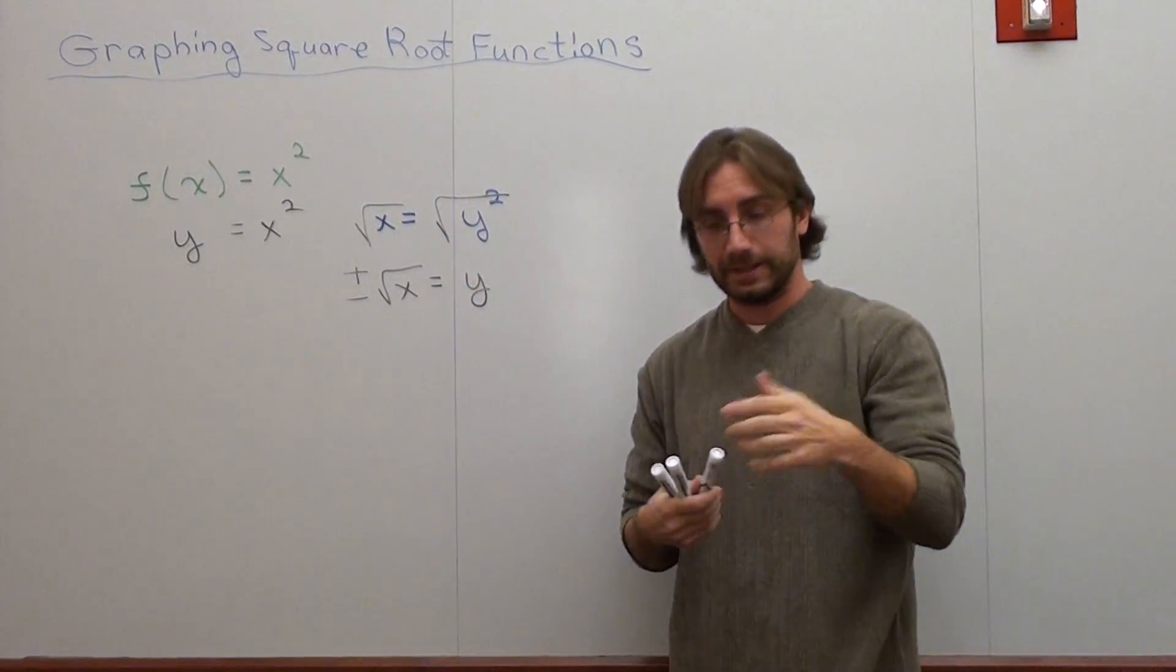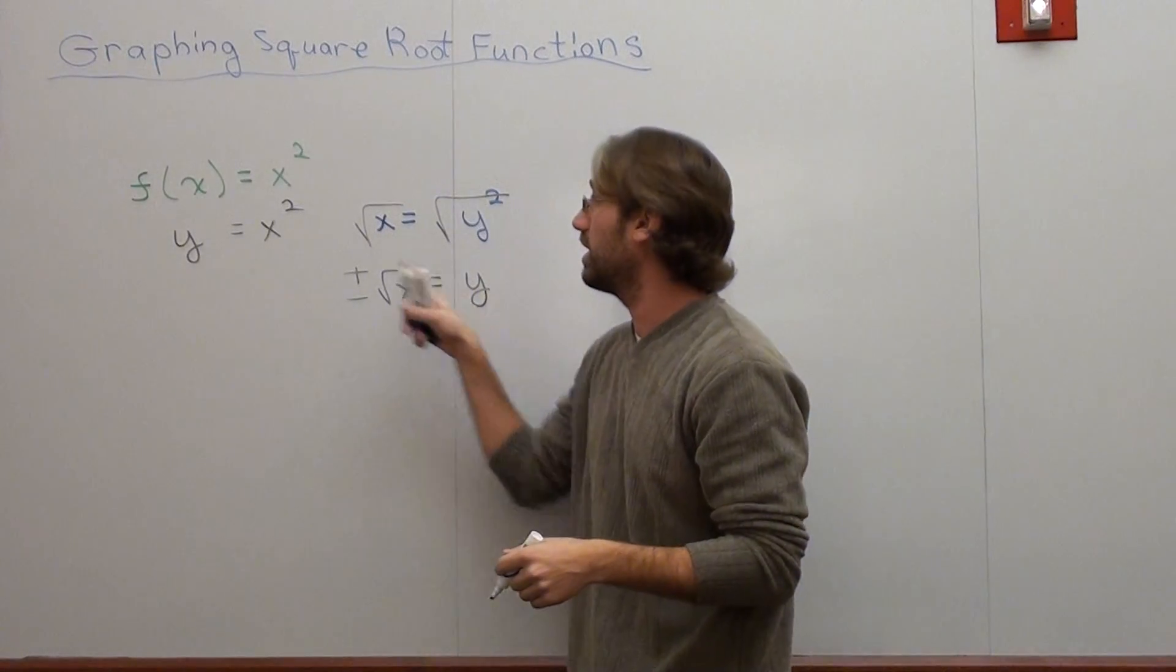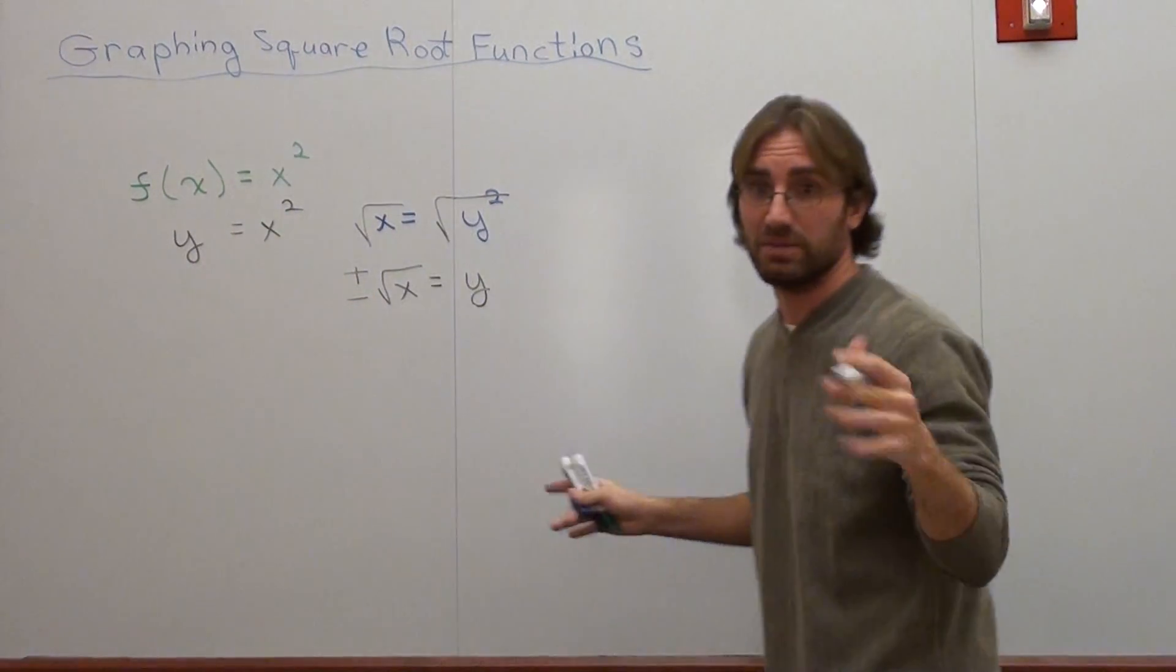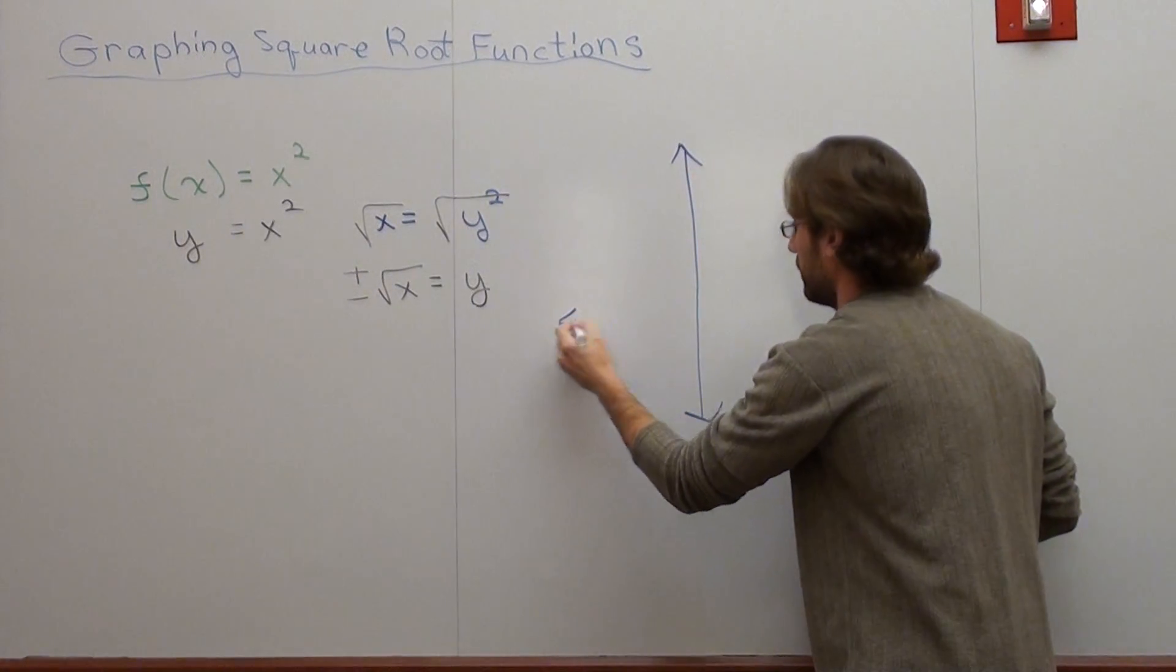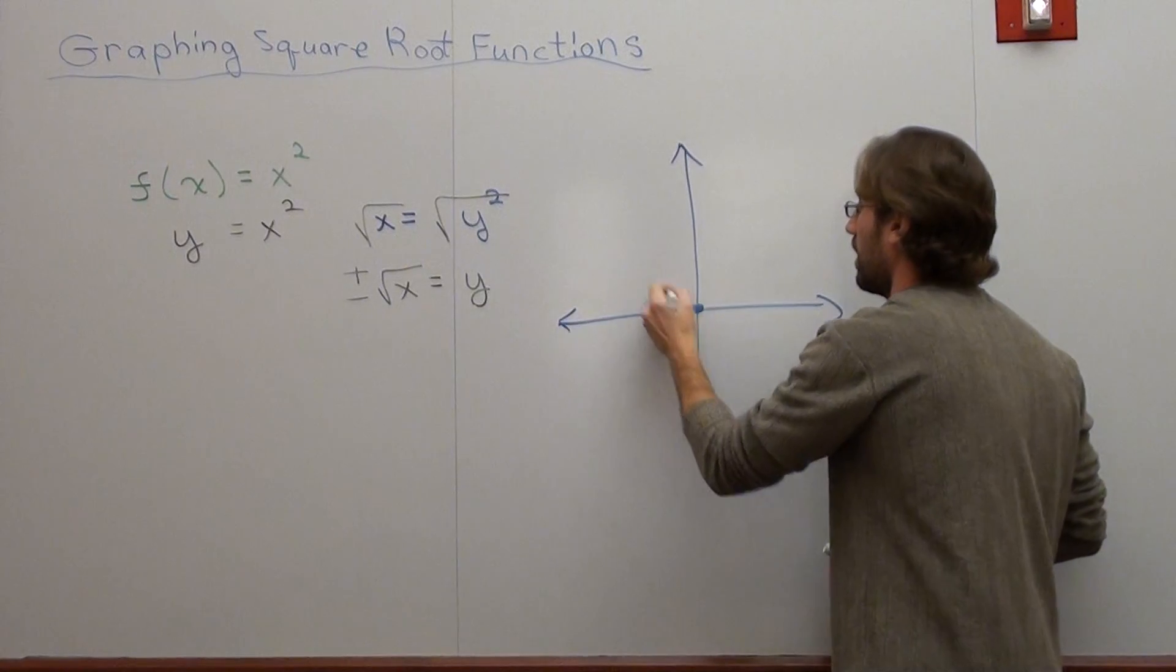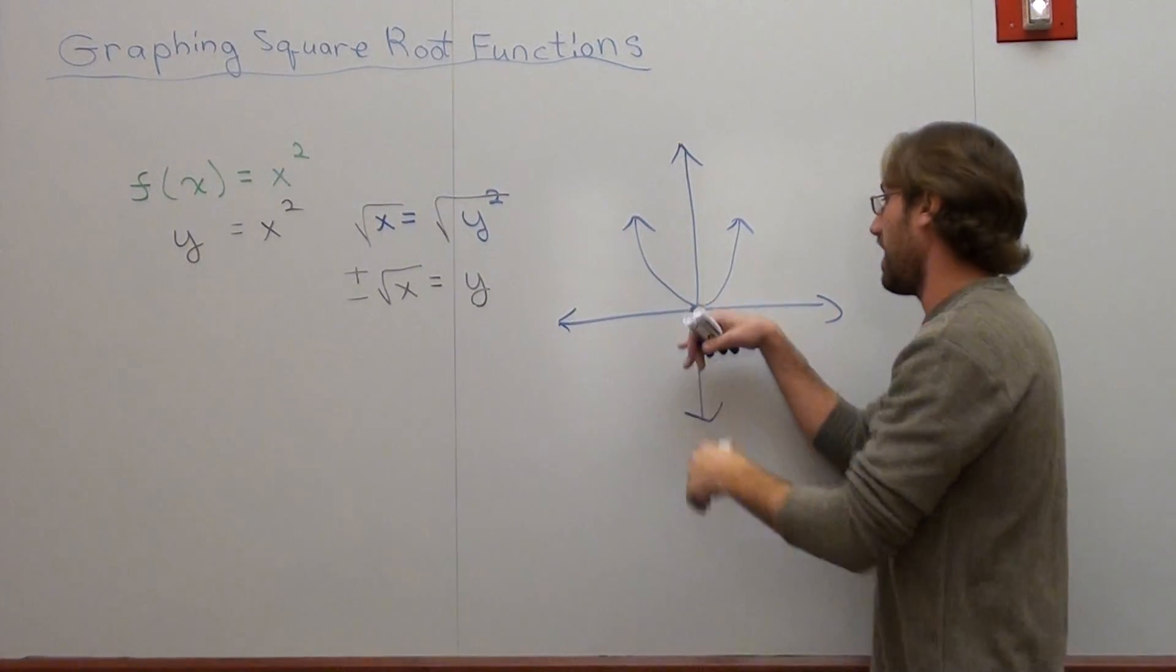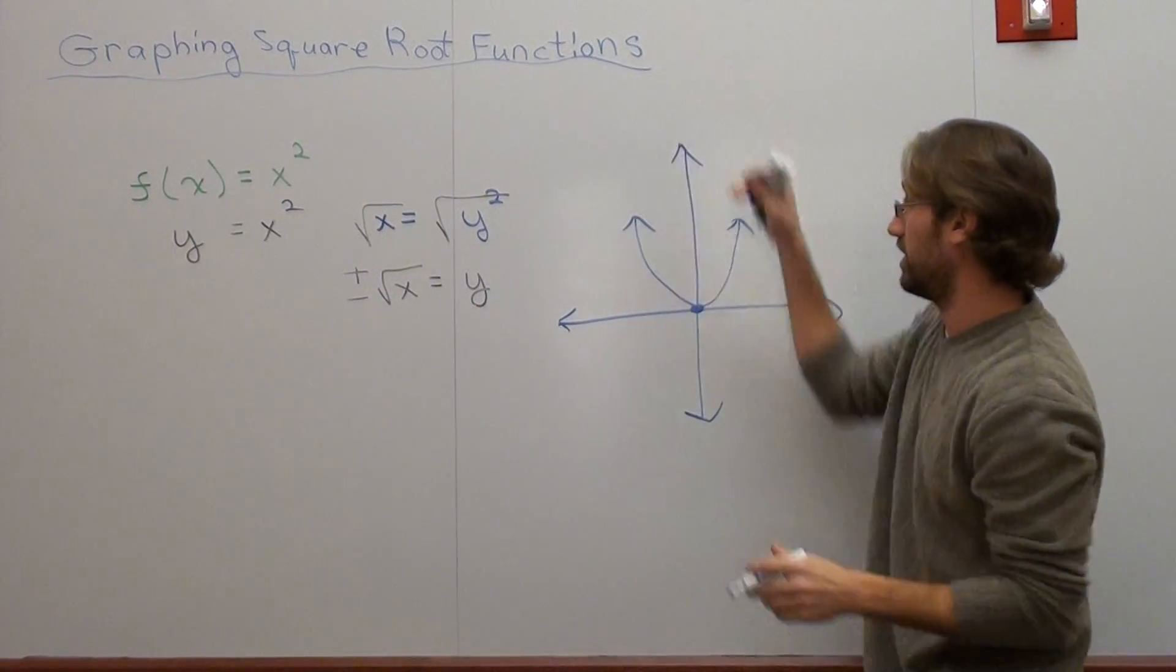Now the problem with this is this. If I graph this on a number line, I'm going to start with y equals x squared, because that's something we're familiar with. It looks something like this, where its domain is negative infinity to infinity. Its range is zero to infinity.